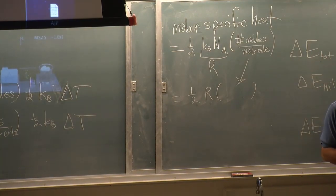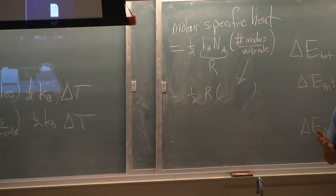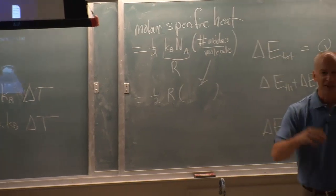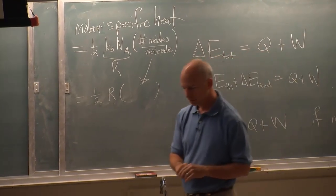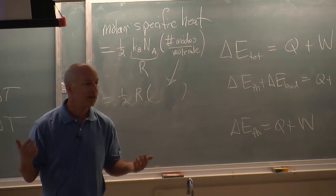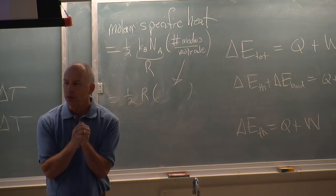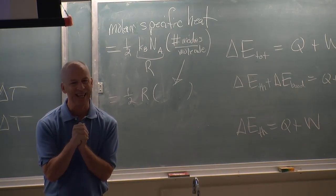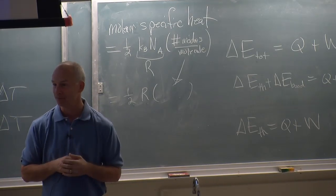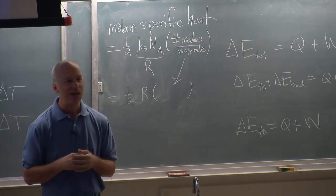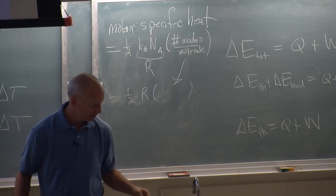I mean you all know the gas constant and you all know one half. So if you can calculate the number of modes per atom or per molecule, whatever it is you've assembled, then you can figure out the molar specific heat of anything. And you can also back that out. You can look up the heat capacity of something, figure out its molar specific heat, divide by one half, divide by R, and you end up with a number of modes that are active.